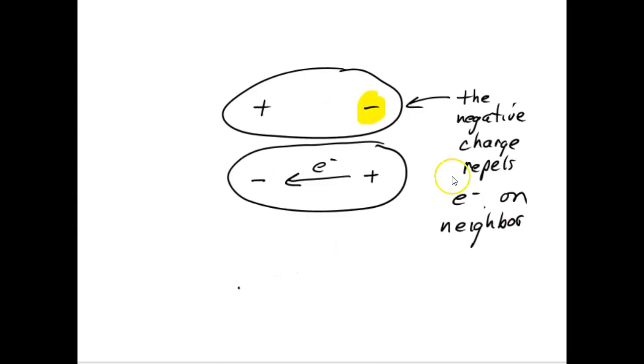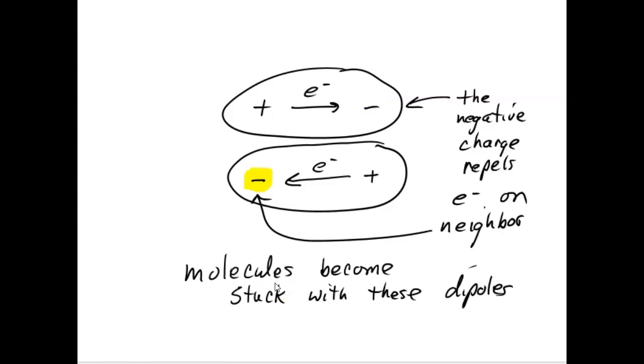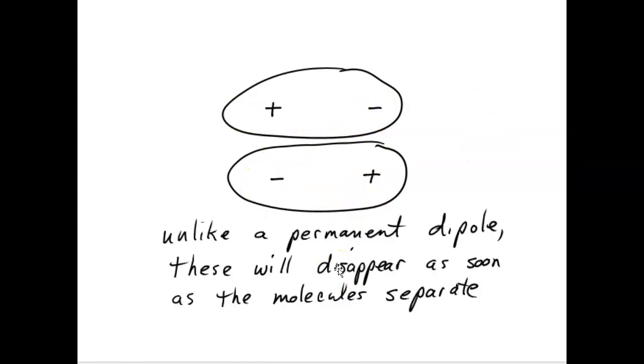But if this molecule happened to be next to another molecule during this, once these electrons move over here, it's going to repel electrons here, and all the electrons in the bottom molecule will move to the left. And then, because these electrons are over here, the electrons that would normally move back over there aren't going to. They're going to be stuck over here, repelled by these. And so these two molecules become kind of stuck in this position.